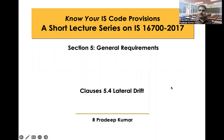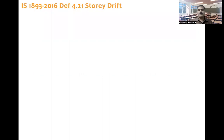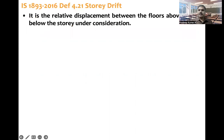Lateral Drift. Before going into the clause, let us discuss the definition given in IS 1893-2016, that is definition 4.2121 — story drift. Story drift is defined as the relative displacement between the floors above and/or below the story under consideration.